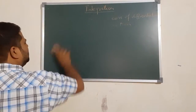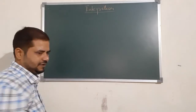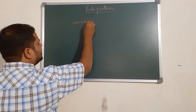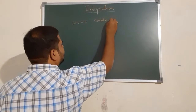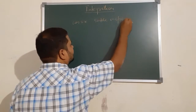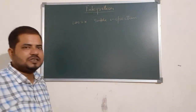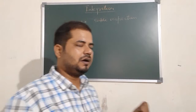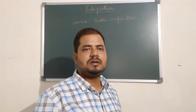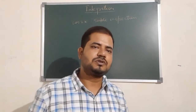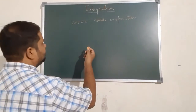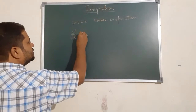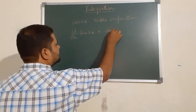Let us integrate cos(2x) by simple inspection. First we find for which function the derivative is cos(2x). The derivative of sin(2x) is cos(2x) into 2.